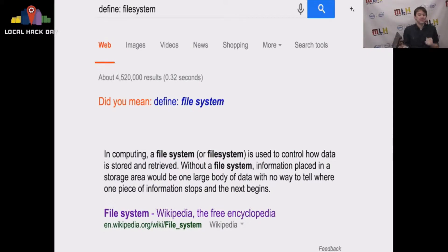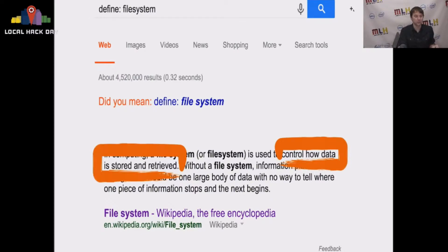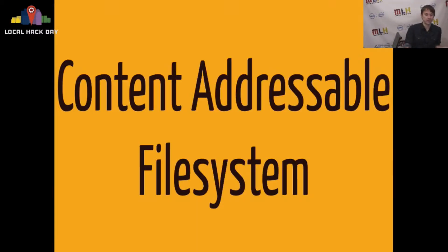What is a file system? A file system is something that controls how data is stored and retrieved, and Git really just does that. It controls how data is stored and retrieved, and it does this with a content addressable file system.